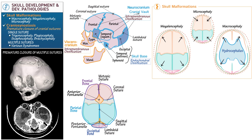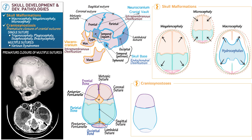Now let's draw the synostoses. First, scaphocephaly — the most common type — accounts for half of all synostosis cases each year. It involves synostosis of the sagittal suture. In accordance with Virchow's law, the interruption of brain growth is perpendicular to the plane of the synostosis, so the abnormal brain growth is parallel to the synostosis. The skull elongates parallel to the sagittal suture, resulting in an elongated, narrow skull shaped like the narrow hull of a boat — the derivation of its name.